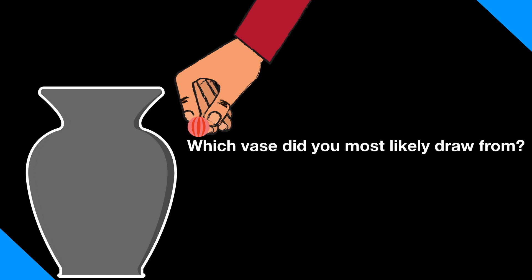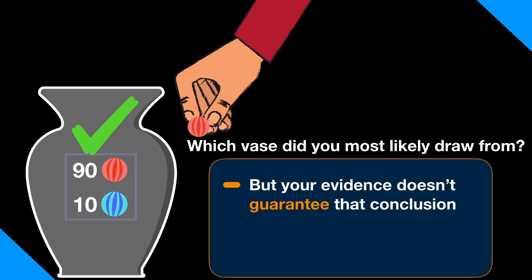Is your gut telling you the one with mostly red marbles? If so, you're right. But notice something. Your evidence, the red marble, doesn't guarantee that conclusion. How confident then should you be that you drew that marble from the vase with mostly red marbles, given your evidence?